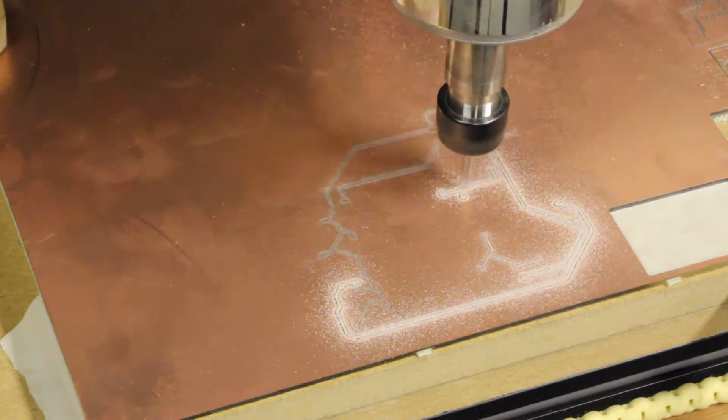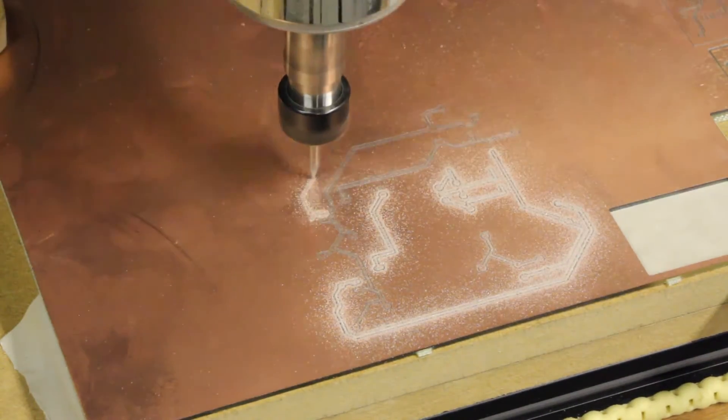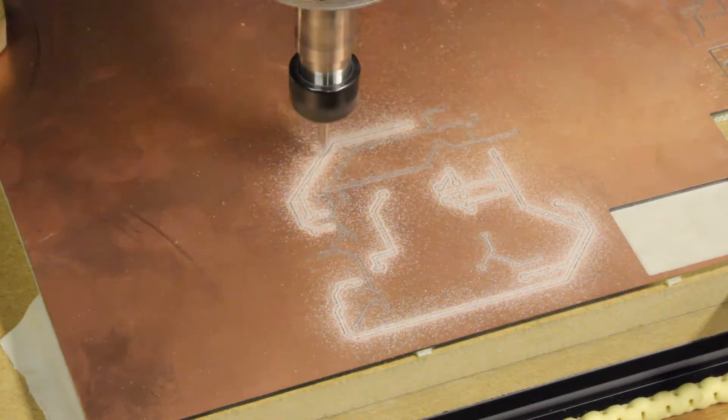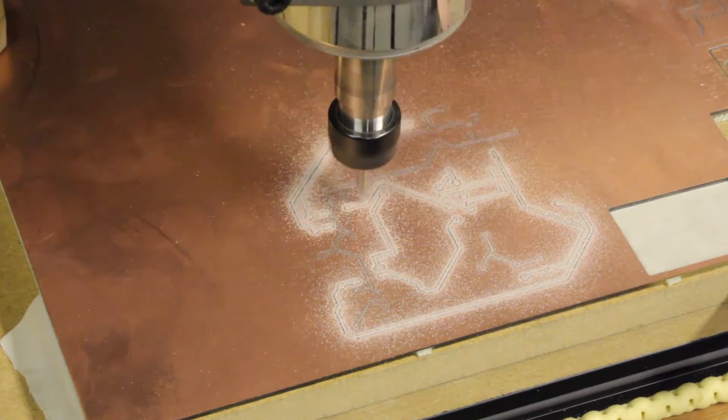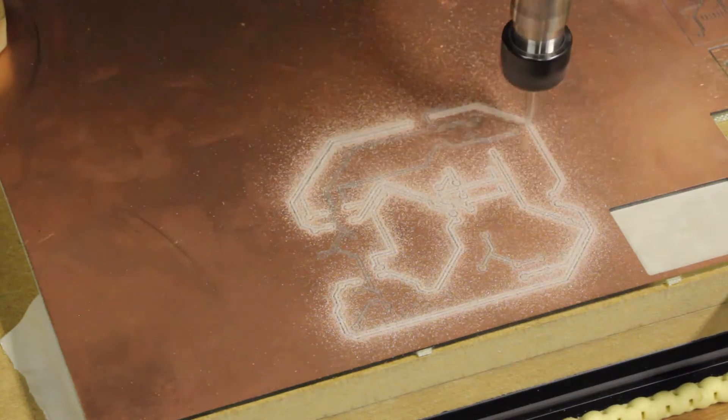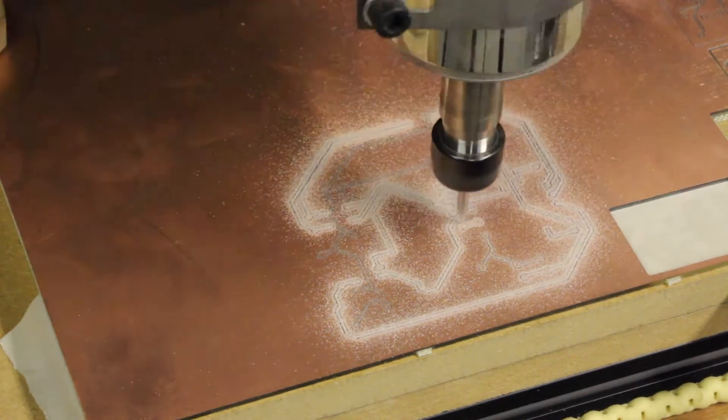I'm using Chili Pepper to do all the milling because it has a nice auto-level feature and it will import Eagle board files, which is really nice. Here you can see I've got a time-lapse going. I just sped it up a whole bunch so we don't sit here all day watching this. It's much slower in real life.